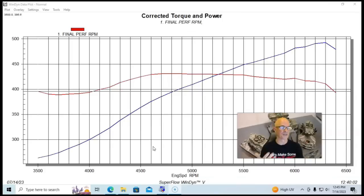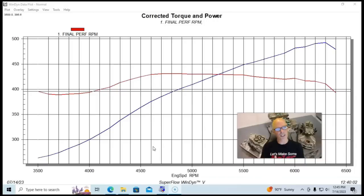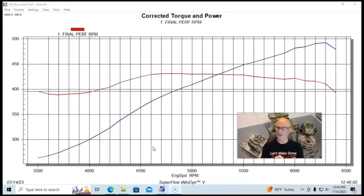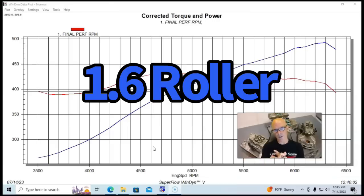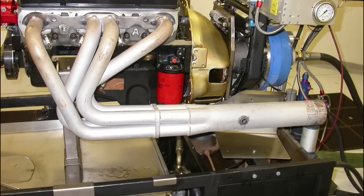Hundreds and hundreds of dyno passes. This thing had an MSD distributor, a pretty good-sized camshaft: 236/242 duration, 555 to 560 lift. It had 1.6 roller rockers and our inch and three-quarter long tube sprint car headers on it.